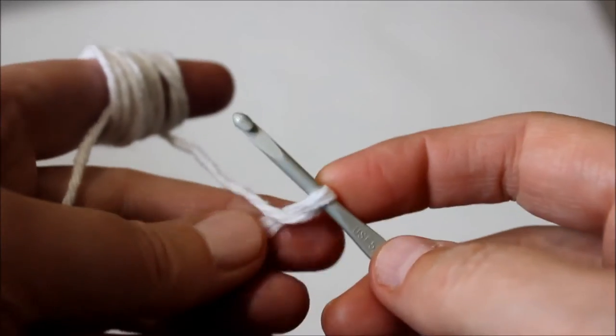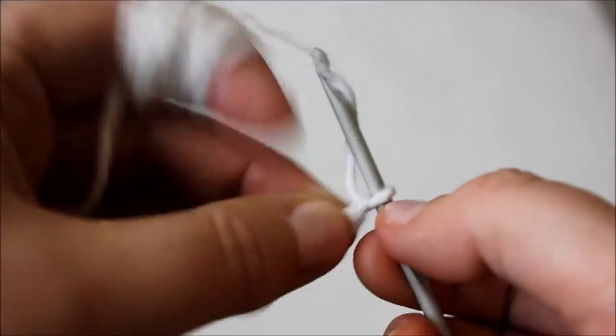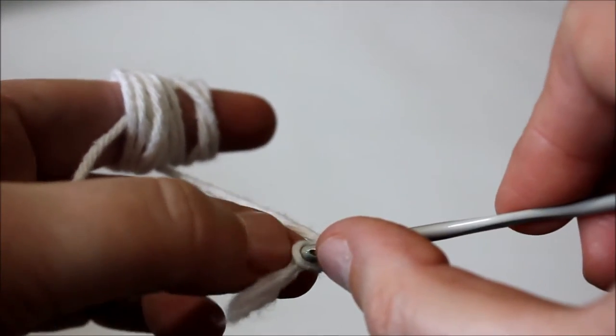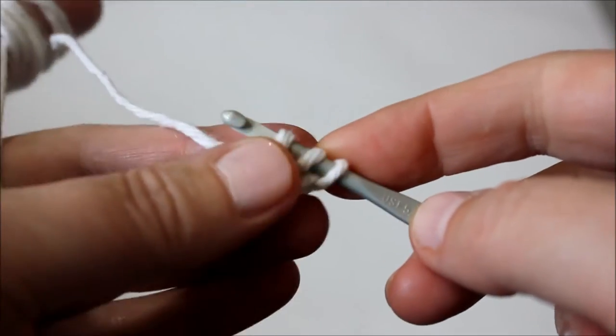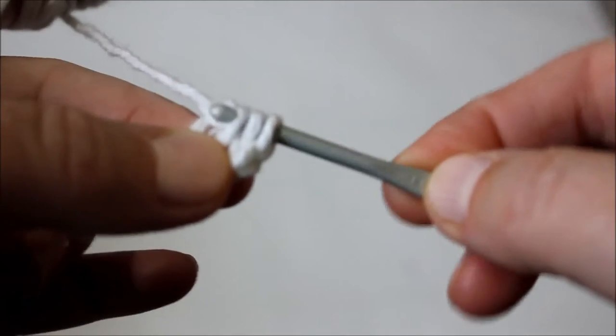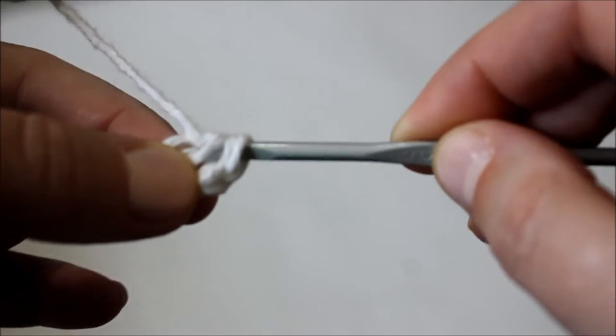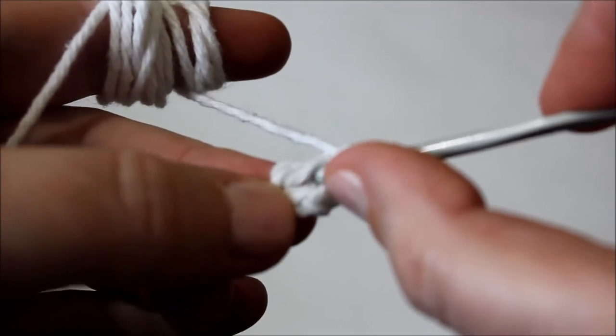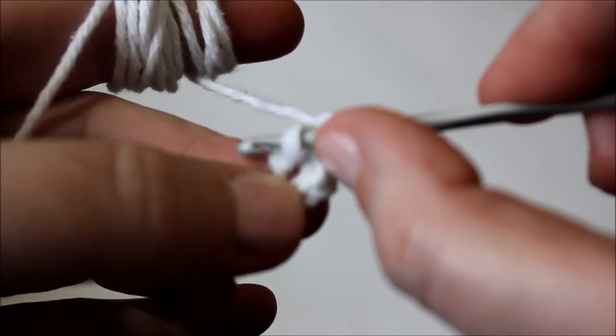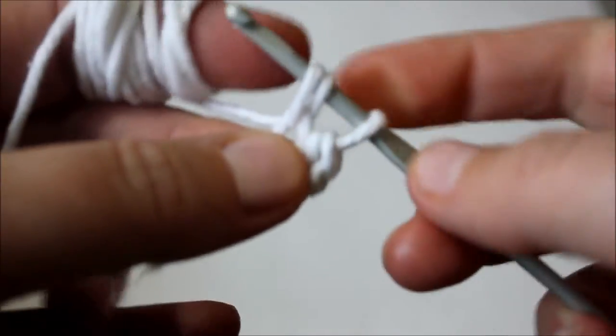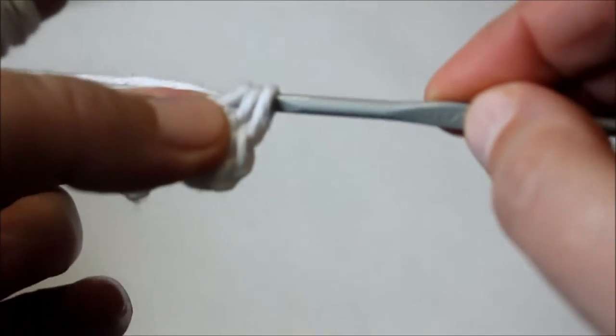We're going to be starting with the first technique, so chain two loosely, yarn over, and then go to the first chain, and we're going to pull at once. Yarn over to the first here, go between, and then pull the three loops at once.